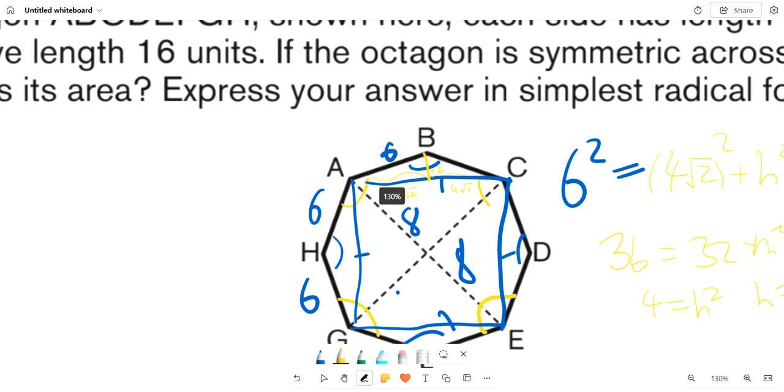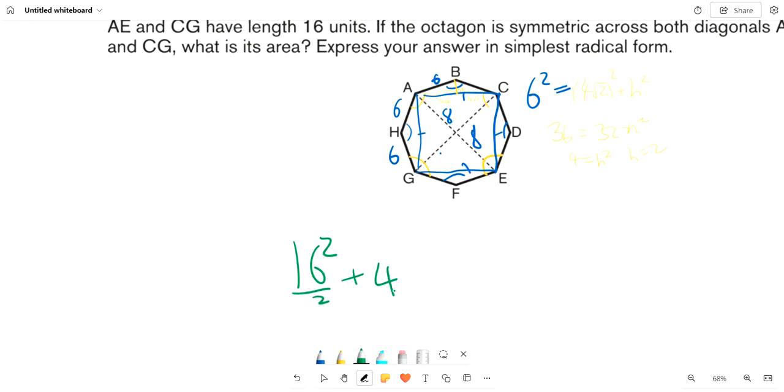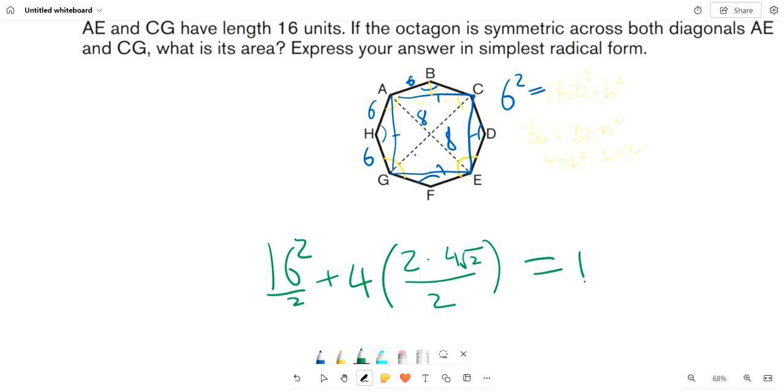So the area of the whole octagon is the area of the square, which is the product of the two diagonals, 16 squared divided by 2, plus each of the four triangles, which are individually 2 times 4 root 2 over 2. This equals 128.